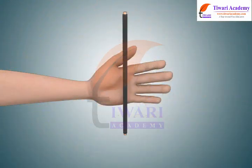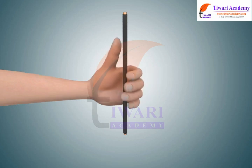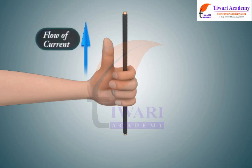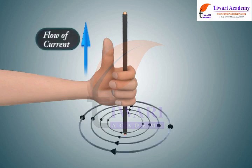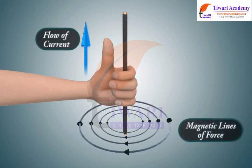If the current-carrying conductor is held in the right hand by the observer so that it is encircled by fingers, stretching the thumb at right angles to the fingers in the direction of flow of current, then the fingertips will point the direction of magnetic lines of force.